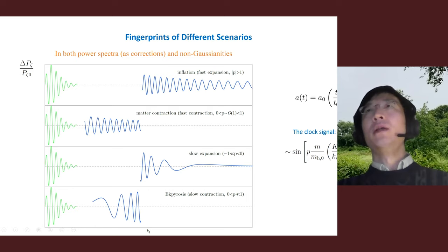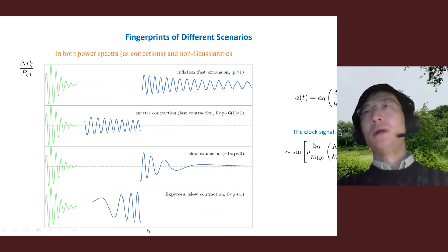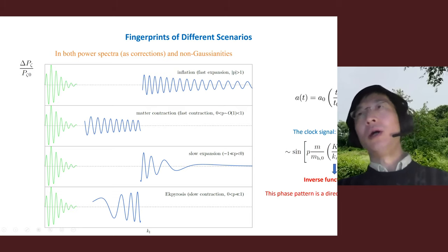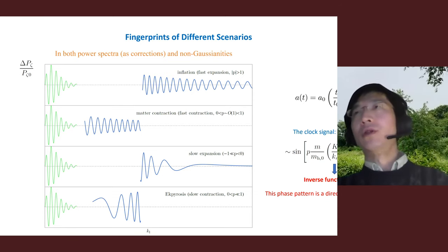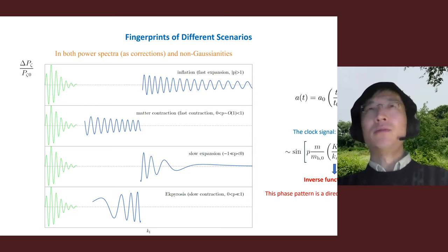Quantitatively, for a completely general background evolution parametrized by a power law with arbitrary p, the running of those clock signals will have a specific form. The most important character of this signal is the sinusoidal argument in terms of k — those are the inverse function of a(t). So the phase pattern will be a direct measurement of a(t).